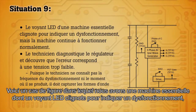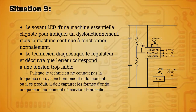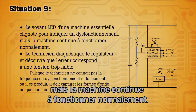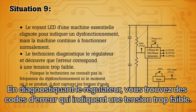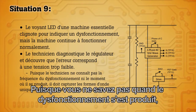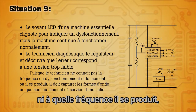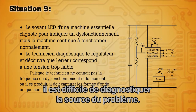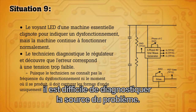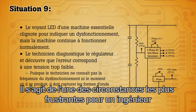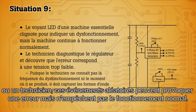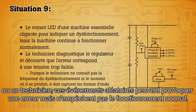Here we have a scenario where you have a critical machine with a fault LED flashing, but the machine is continuing to operate normally. Diagnosing the controller, you find the error codes indicate there has been a low voltage condition. Since you don't know when the fault occurred or how often it's happened, it's difficult to diagnose the root of the problem. This is one of the most frustrating circumstances for an engineer — these random events that cause an error but allow for otherwise normal operation.